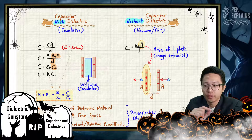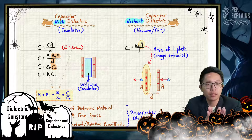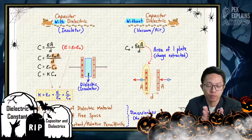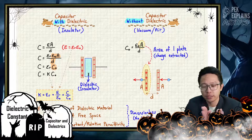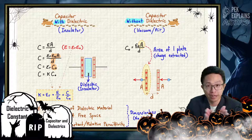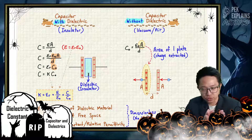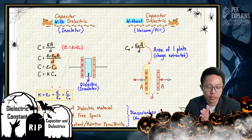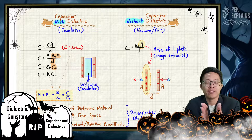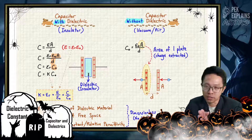This dielectric is normally inserted in between the two plates of the capacitor so that it prevents these two plates from touching each other, because we know that these two plates have opposite signs — one is positive, one is negative. So positive and negative tend to attract each other, and these two plates tend to attract each other. That's why we put a dielectric in between, so that the two plates can be at a very close distance yet cannot touch each other.